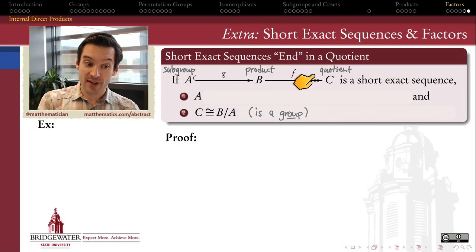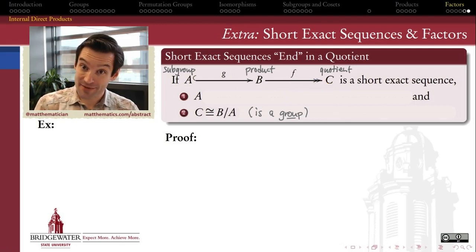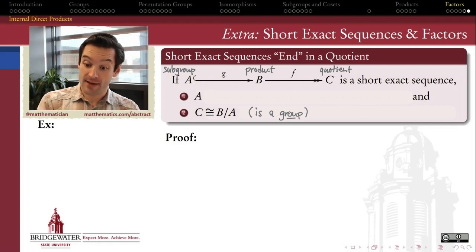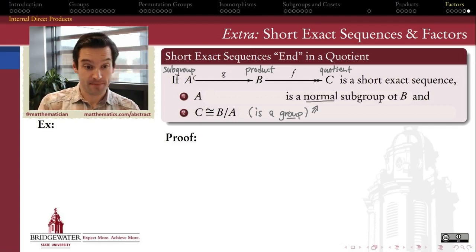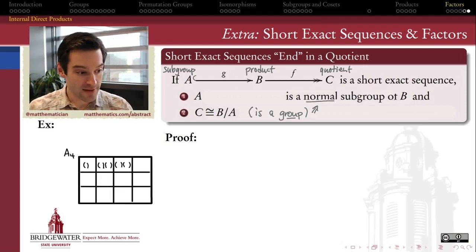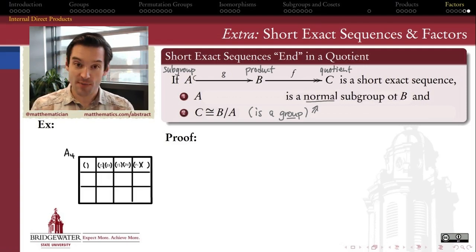In this video we're going to convince ourselves that when we have a short exact sequence of groups A, B, and C, that C actually can be realized as the quotient of B by a normal subgroup of B. The fact that C here on the end is in fact a group should be our first clue as to why A is isomorphic to a normal subgroup of B. So let's start by thinking of an example.